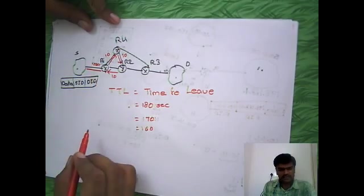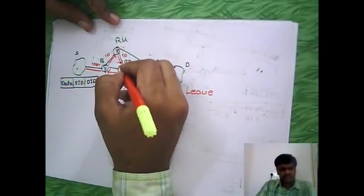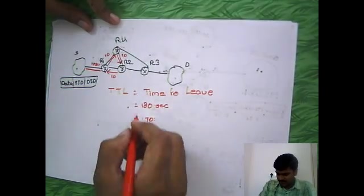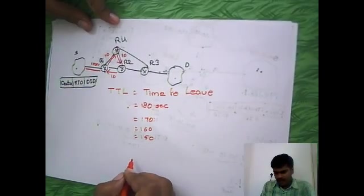It will take from here to here on average 10 seconds. Like this, it will also send to R2, so while sending this, it will set 150.